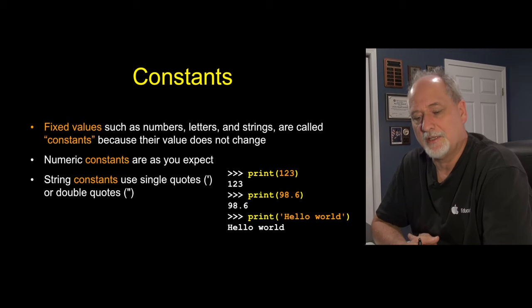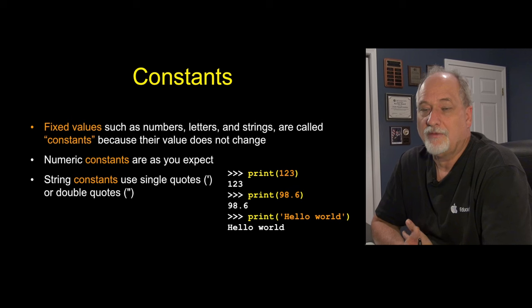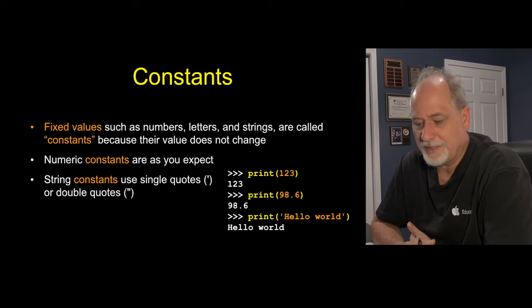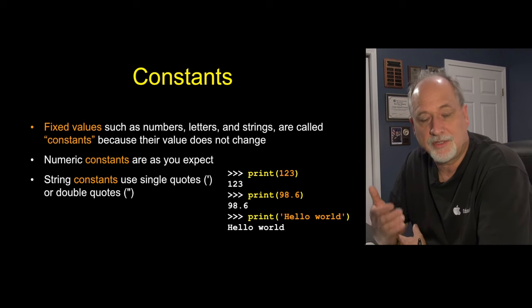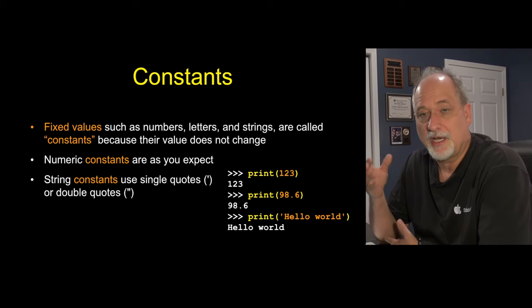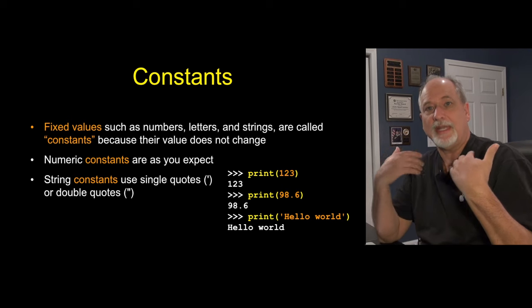And so 40 is the constant in that situation. So we have 123, we have 98.6, we have hello world which is a string by enclosing it in quotes. We pass each of these things to the print function and the side effect of the print function is that we see the output.